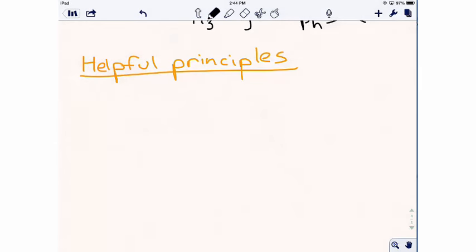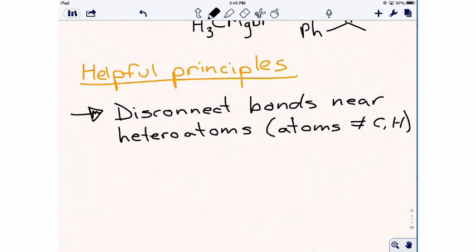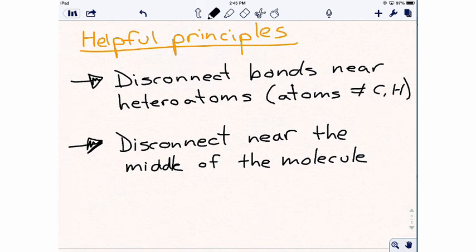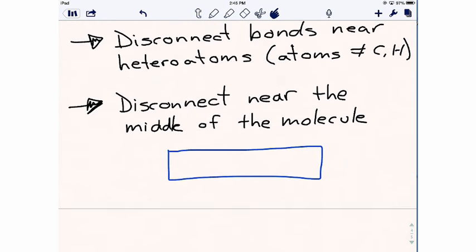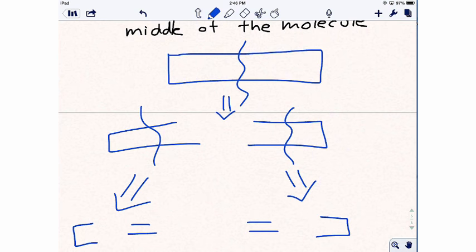There are a couple of important principles to keep in mind. First, disconnect near heteroatoms. Those are atoms not equal to carbon or hydrogen. Second, disconnect near the middle of the molecule. As much as possible, if you can, imagine the rectangle in the blue being a molecule, and by disconnecting in the middle and generating equal halves, that symmetry can allow us then to disconnect each half further, all the way back to the starting materials.